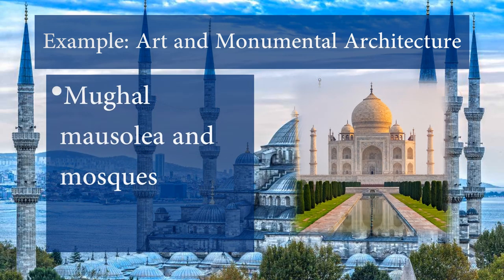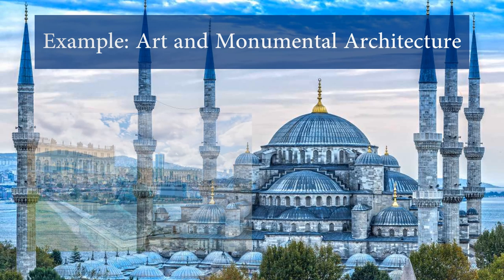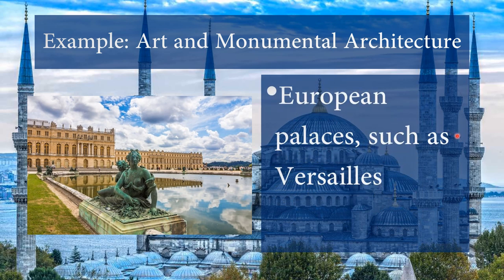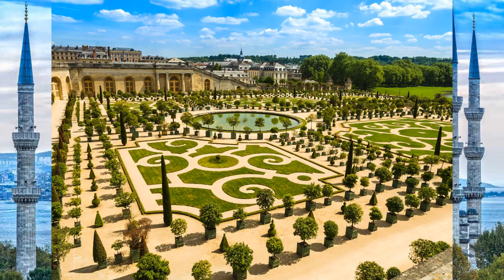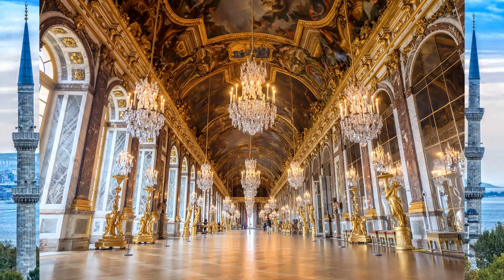Very famously, the Taj Mahal — a mausoleum to Shah Jahan's wife — is so impressive it shows the power of the Mughal ruler. All throughout North India, what will become Pakistan and Bangladesh, you see large mosques built during the Mughal Empire. In Western Europe, you have Versailles — an extremely impressive palace outside of Paris built for Louis XIV — very extravagant, with famous gardens. It's a great example of monumental architecture used to legitimize rule.